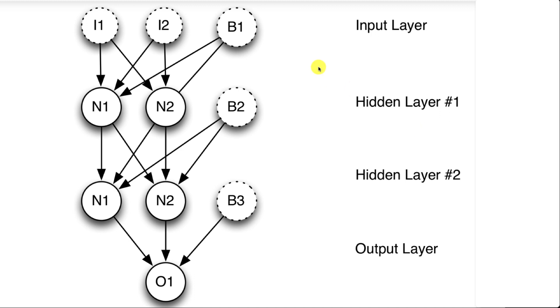You're going to have your input layer. These input neurons are the values that come into the neural network. Then you're going to have several hidden layers, finally going to the output layer.